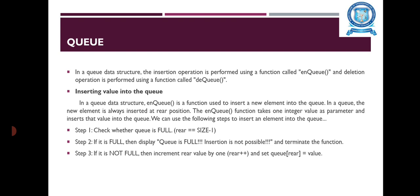In a Queue Data Structure, the NQ function is used to insert a new element into the queue. The new element is always inserted at the rear position. The NQ function takes one integer value as a parameter and inserts that value into the queue. Steps: Step one — check whether the queue is full, i.e., rear equals size minus one. If it is full, then display 'Queue is full, insertion is not possible.' If it is not full, then increment the rear value by one (rear++) and set queue[rear] equal to value.